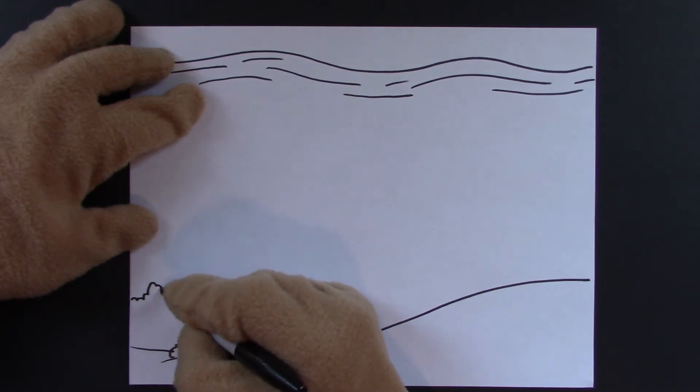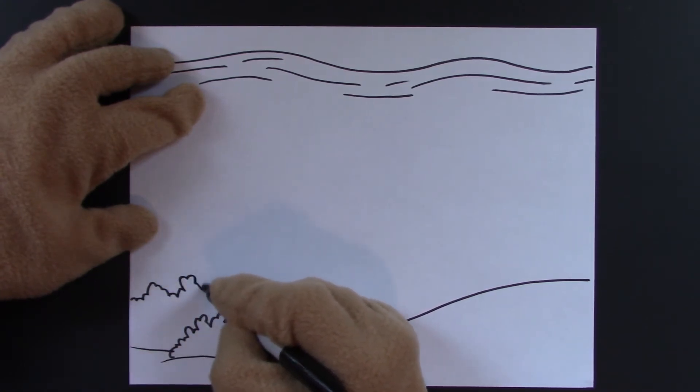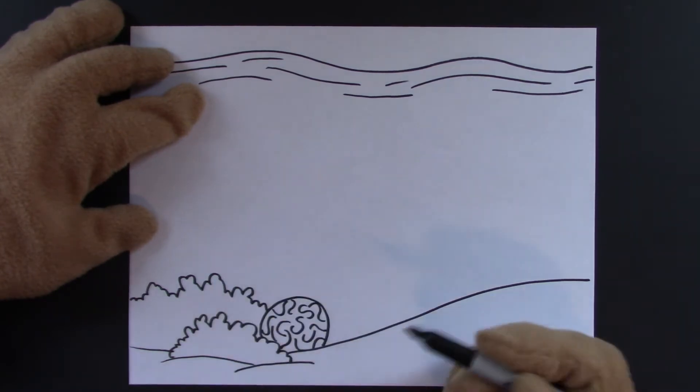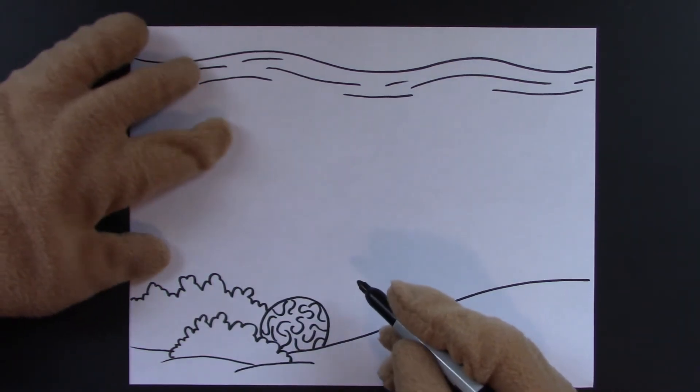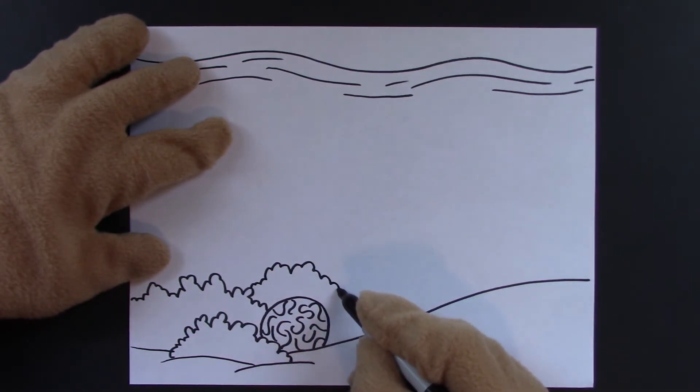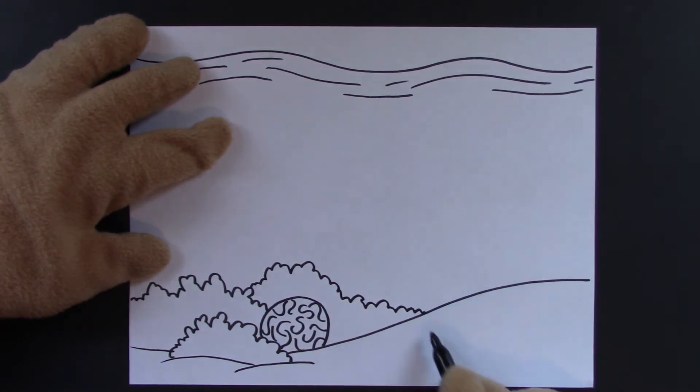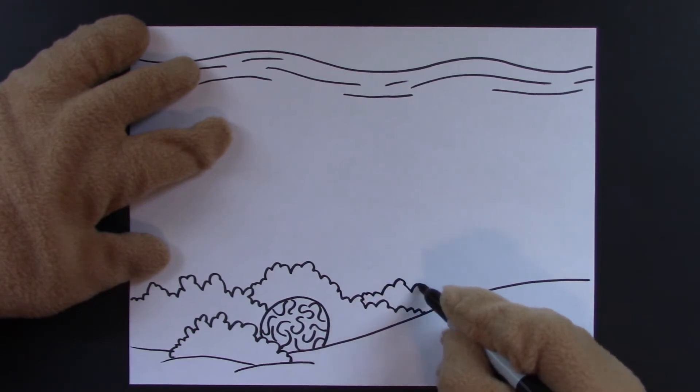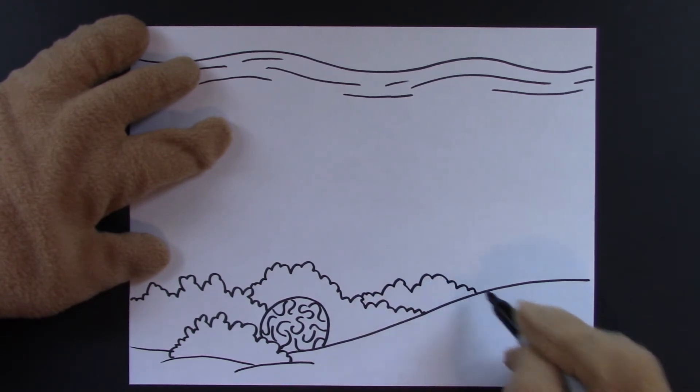Now we'll draw more coral here. You can make it smoother, lumpier, however you like. Then we'll draw another piece of coral right behind this one. Going all the way back over here to the sand. Now let's do one more piece of coral right here. And it looks like it's a little farther back.